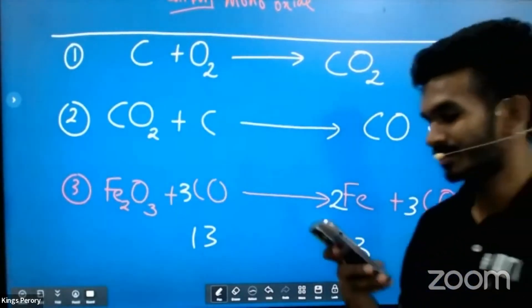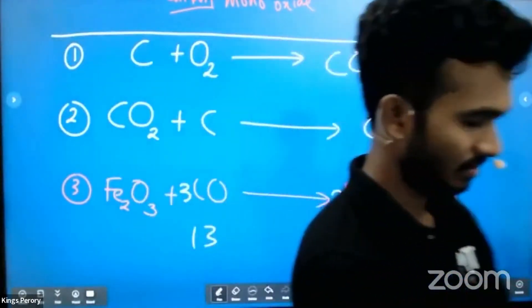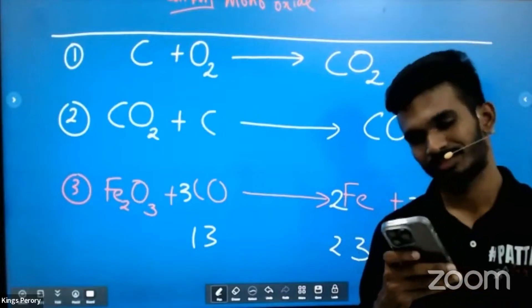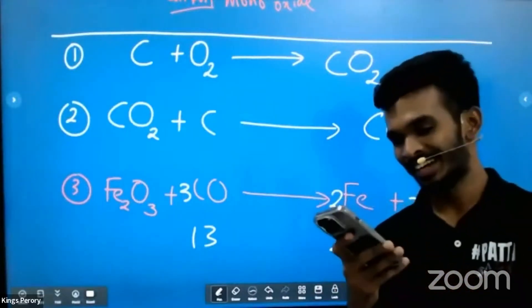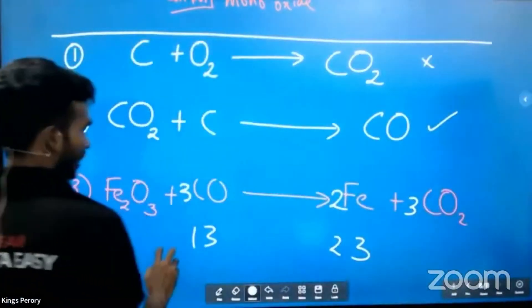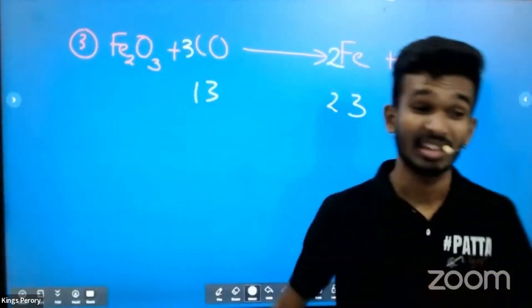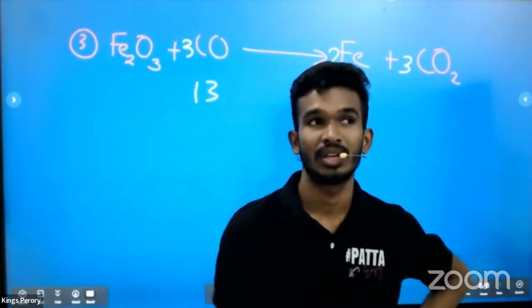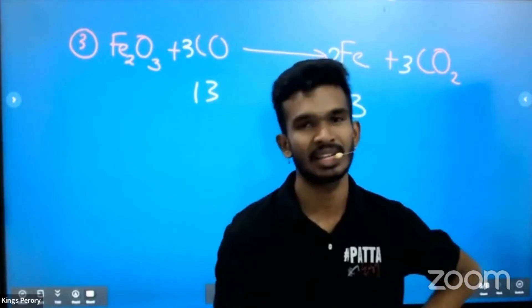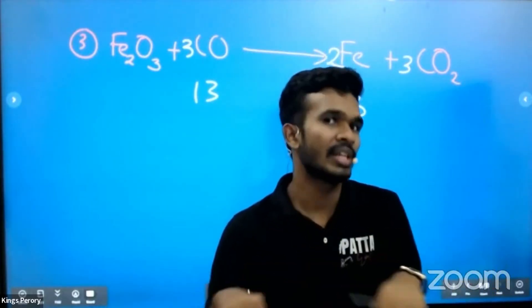Now understood iron extraction — but wait, there are two more steps. Iron is extracted but it has many impurities in it. Sand is there, aluminium oxide is there. After extracting iron, impurities are still present, so your final step is removing the impurities.